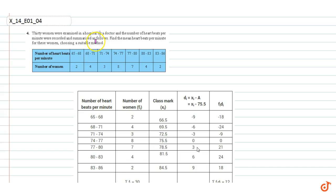In this question we are given the data of heartbeats of 30 women and we have to find the mean heartbeats per minute for these women using a suitable method. This is the data given. We will solve this problem using the assumed mean method.